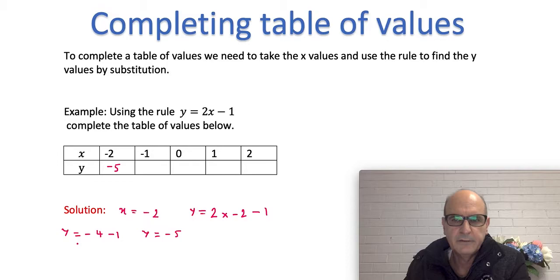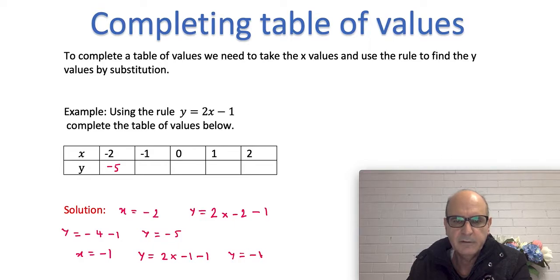So we're done with the first value of x. Now we go for the second value of x, which is x equal to minus 1. Now I'm going to again use the rule and replace this x with minus 1. Remember again, I got to put the times between 2 and x. So I write y equals 2 times x, which is minus 1, then the rest of the rule minus 1. So 2 times minus 1 is minus 2, then minus 1. Minus 2 take away 1 is minus 3, so we write it here.